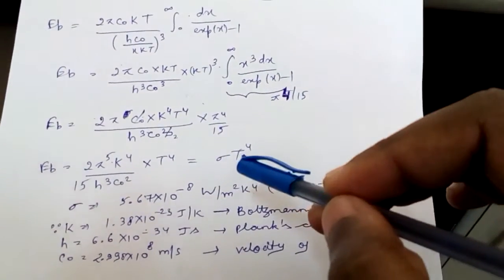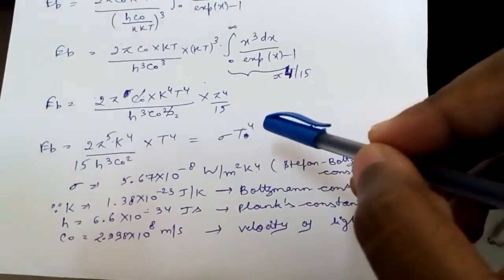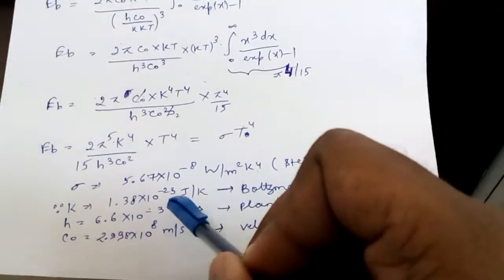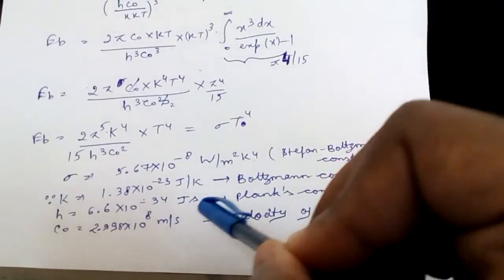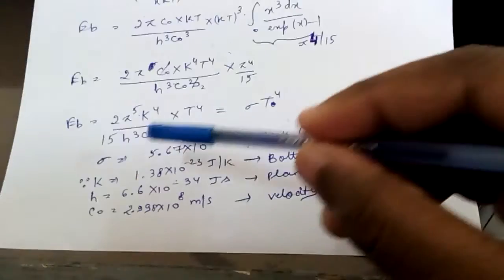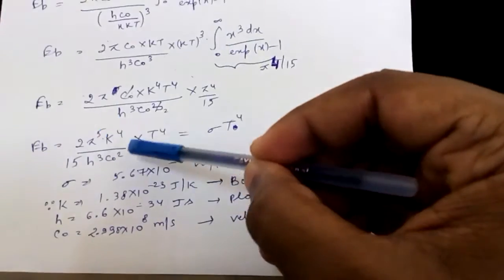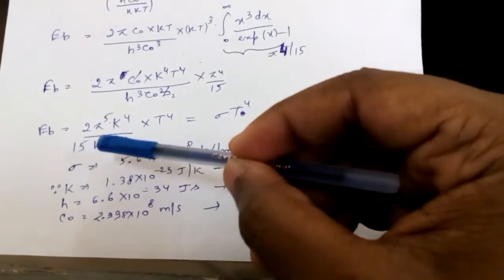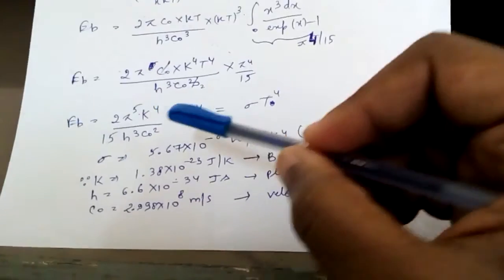So our desired output — Stefan-Boltzmann law — is that the total emissive power of a black body equals σT⁴. It is proved. Here k = 1.38 × 10⁻²³ J/K, h = 6.6 × 10⁻³⁴ J·s, and c₀ = 2.998 × 10⁸ m/s. Once you put these values in and evaluate, you will get 5.67 × 10⁻⁸ W·m⁻²·K⁻⁴.